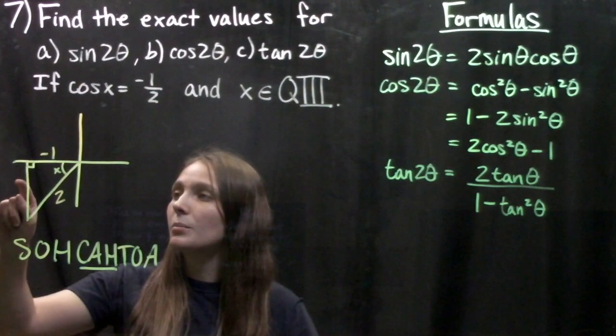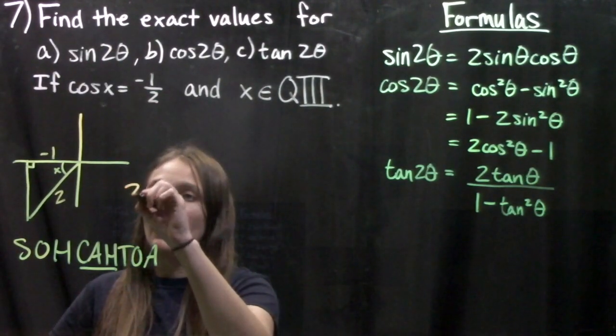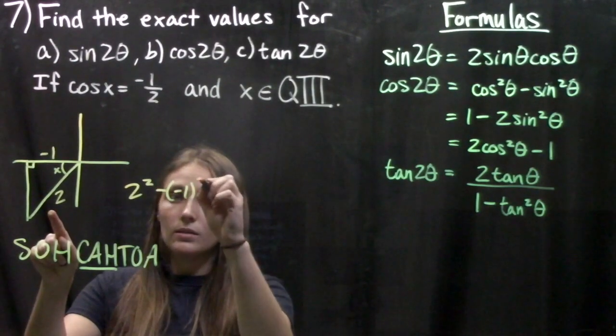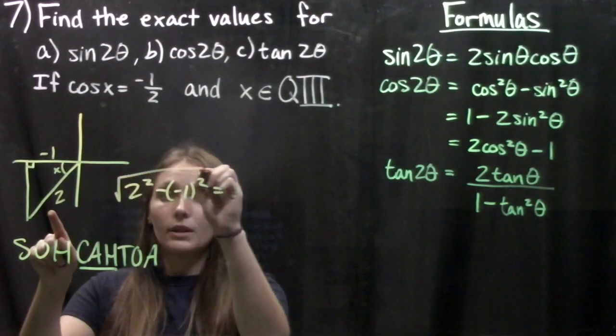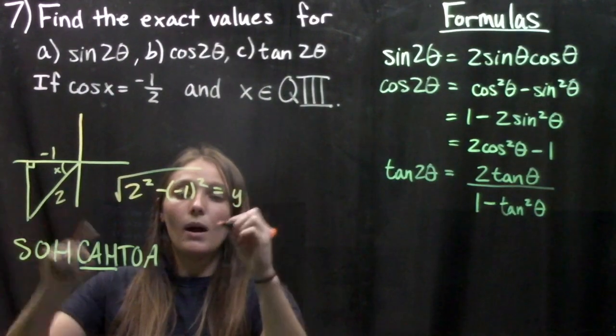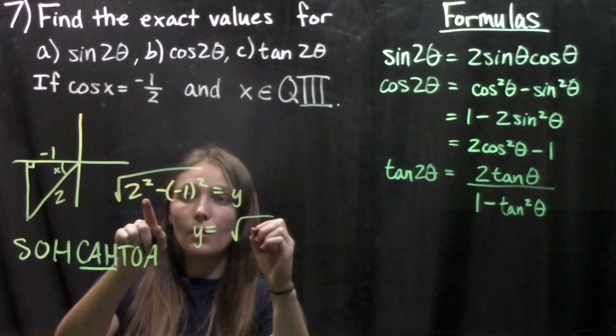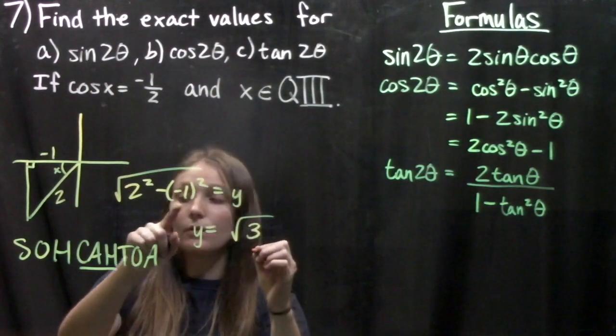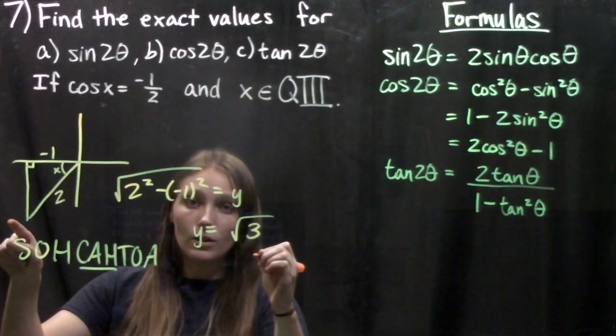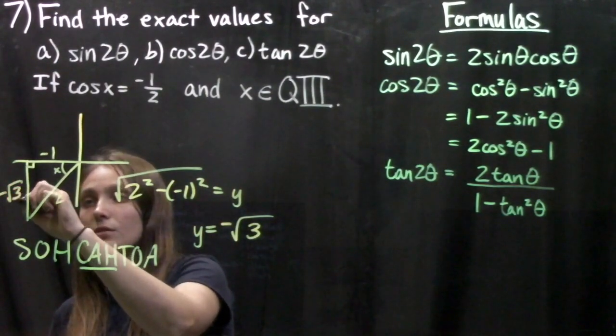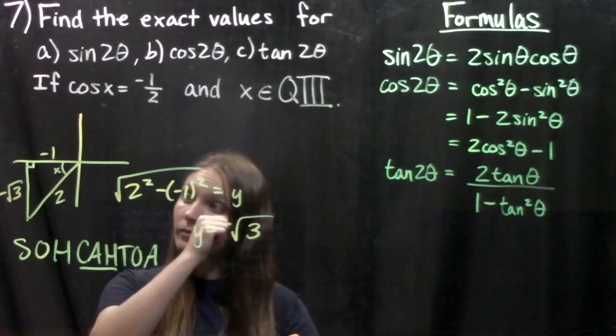To complete the triangle we find that 2 squared minus negative 1 squared, square rooted, equals our y. So y equals the square root of 4 minus 1, which is square root of 3, and since we're in the third quadrant it's negative. So we've got negative square root of 3.